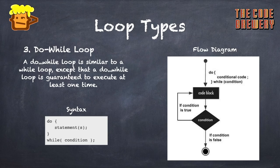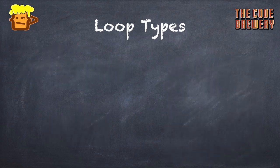Since the condition is given at the end, the loop body executes first. From the flow diagram we can see: 'do' happens first, then the code block executes, then the condition is checked. If the condition is true it executes again; if not, it moves further.